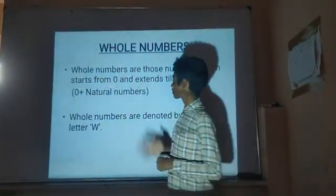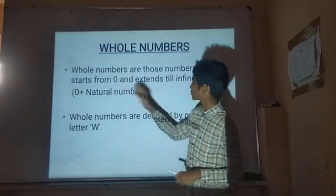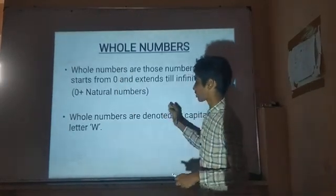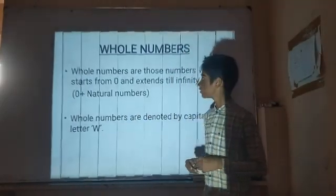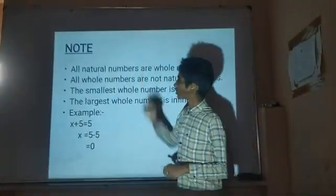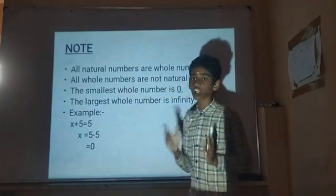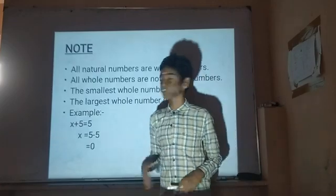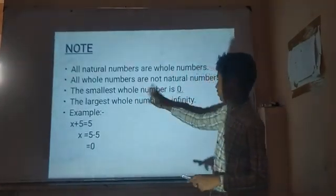Whole Numbers are those numbers which start from 0 and extend till infinity — that is, 0 plus natural numbers. Whole Numbers are denoted by the capital W. Note: all natural numbers are whole numbers, but all whole numbers are not natural numbers, because whole numbers also include 0. The largest whole number is infinity.